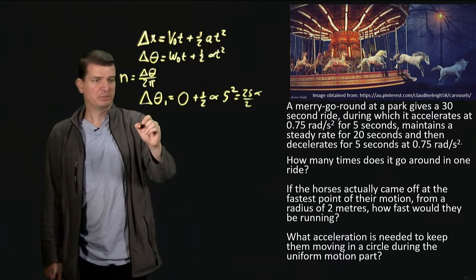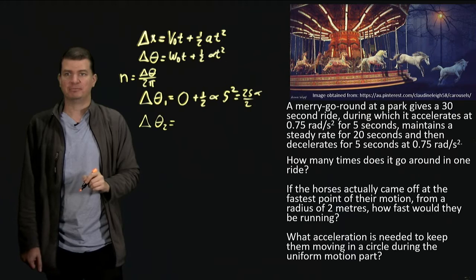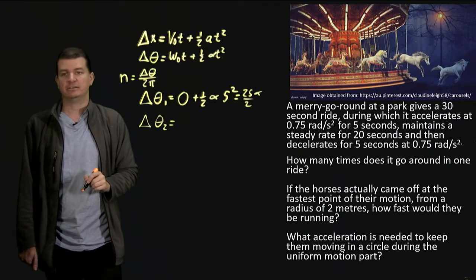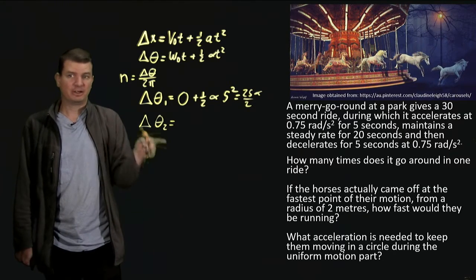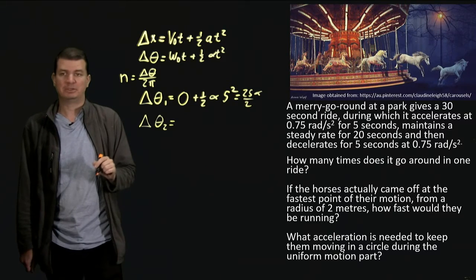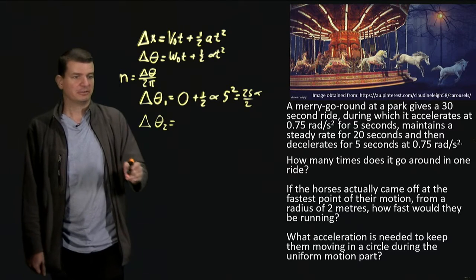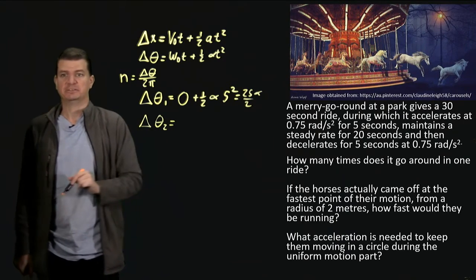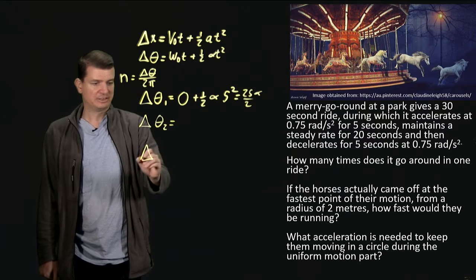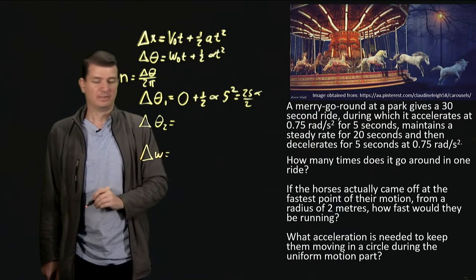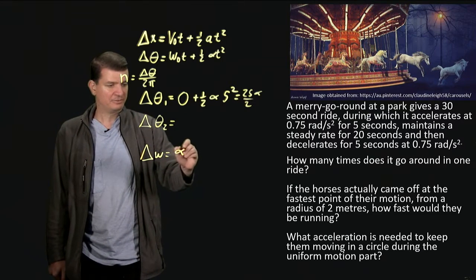For the second part we run into a slight issue — we need the initial velocity for this phase, which is the final velocity from the acceleration phase. By analogy to a car, we know delta v equals a times t, so delta omega equals alpha times t. That gives us the change in angular velocity during the first phase.